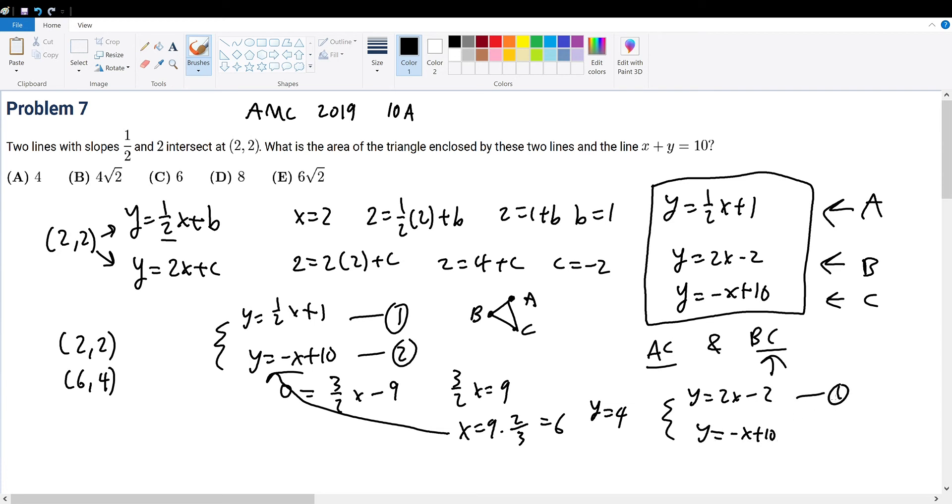We call this equation 1. We call this equation 2. We subtract equation 1 from equation 2. 0 equals 3x minus 12. Hence, x equals 4. And from x equals 4, we can plug it into the second equation to get y equals 6. Hence, our third point of intersection will be (4,6).